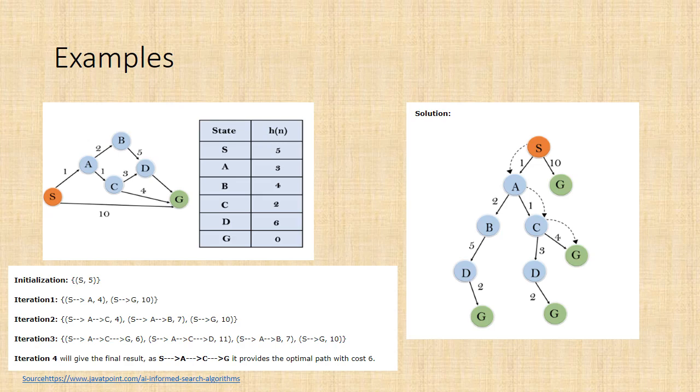On initialization, open list contains S:5. Iteration 1: we expand S, so the list contains S-A is 4, S-G is 10. Iteration 2: we expand A, so the list contains S-A-C is 4, S-A-B is 7, S-G is 10.